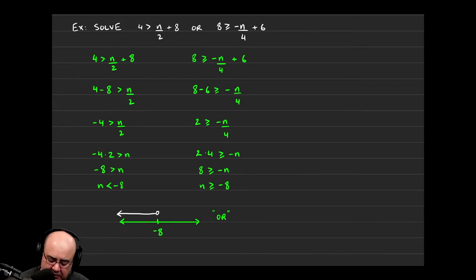And then I'll do the second one in green. n is greater than or equal to negative 8. So I'm going to make a solid dot over negative 8 and then make it go to the right.